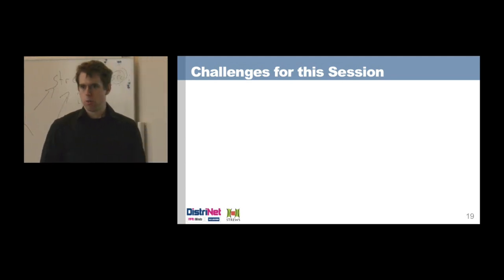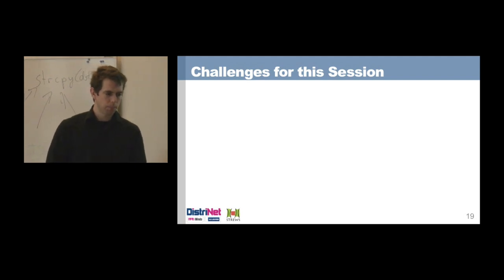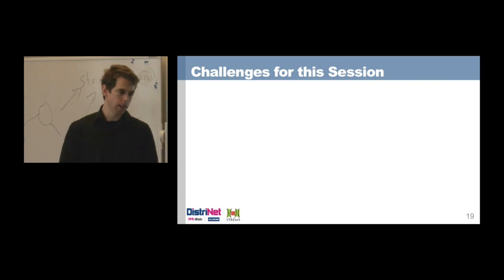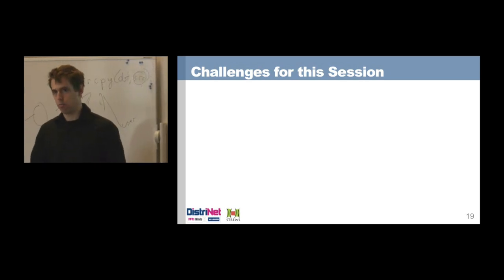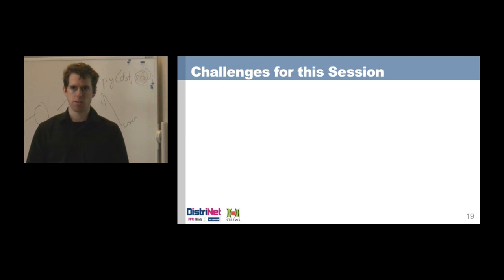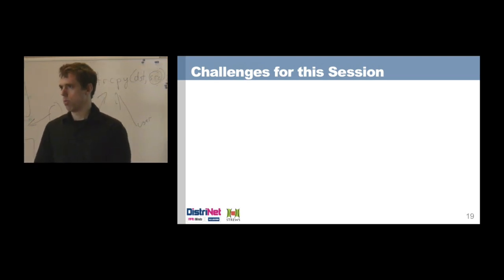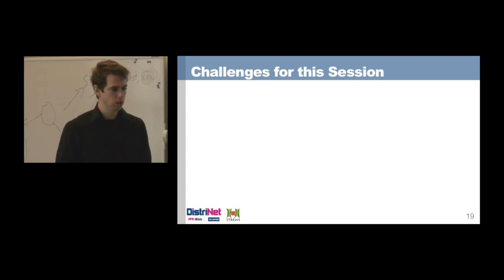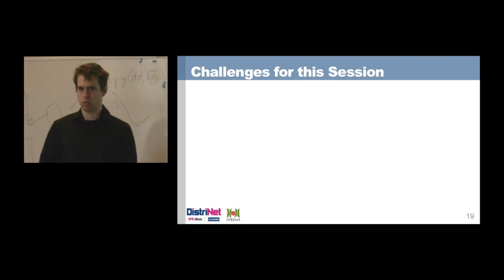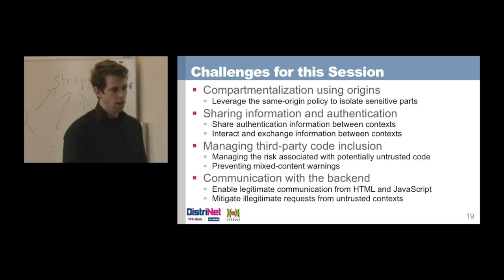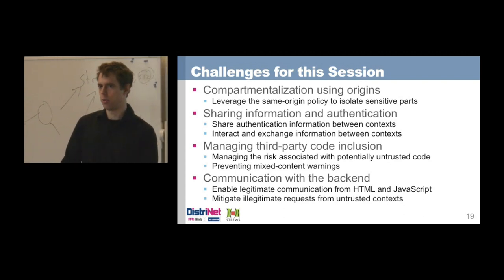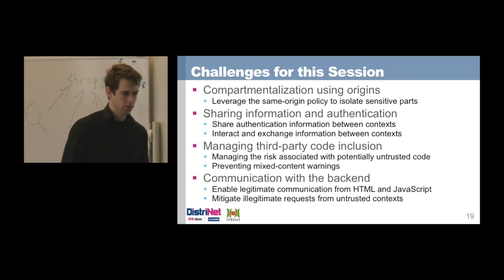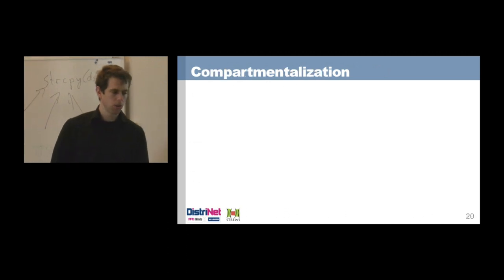We want to use third-party code — analytics, Twitter, everything associated — but without mixed content warnings. We want to manage the risks: trusting trustworthy providers where the risk is acceptable, but not including code from shady websites. And finally, we need communication mechanisms for the backend — how can you send requests back and forth from HTML and JavaScript while still distinguishing between legitimate and illegitimate requests? That's a lot of challenges, so let's dive right in with compartmentalization.